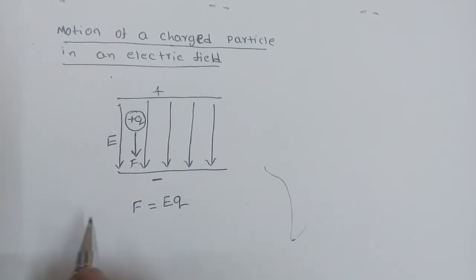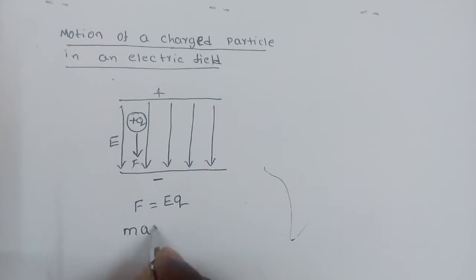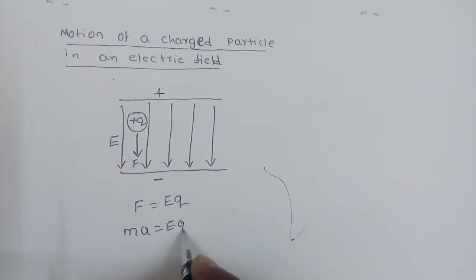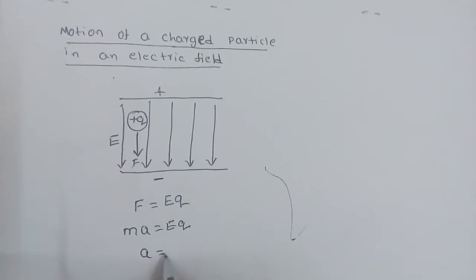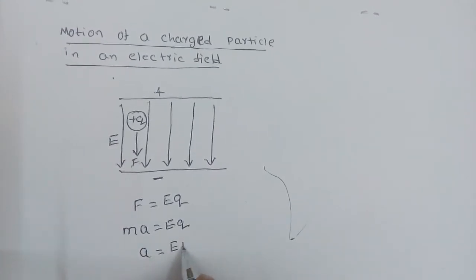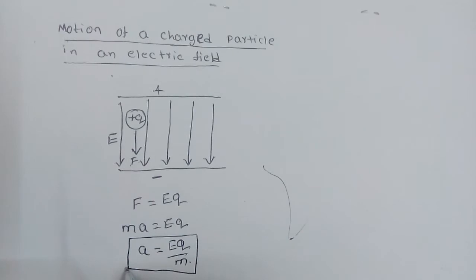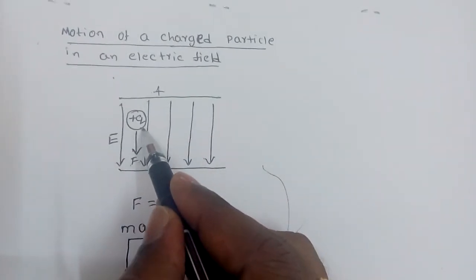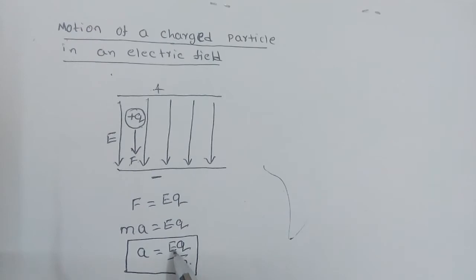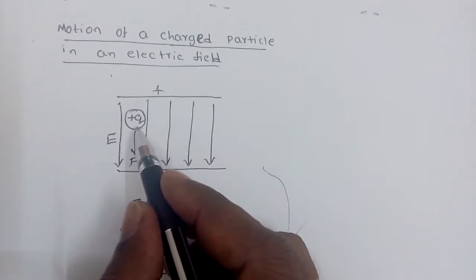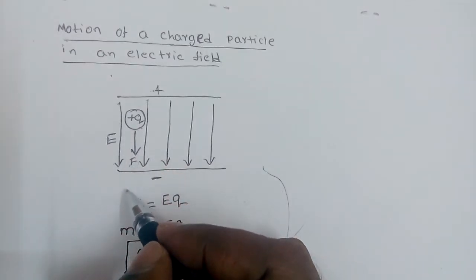Since force acting on a body equals mass times acceleration, and the mass of the particle is m and acceleration is a, we get ma = Eq. Therefore, the acceleration of the charged particle is equal to Eq/m. This positively charged particle inside the electric field gets acceleration Eq/m, and that is why it has the tendency to move towards the negative plate.